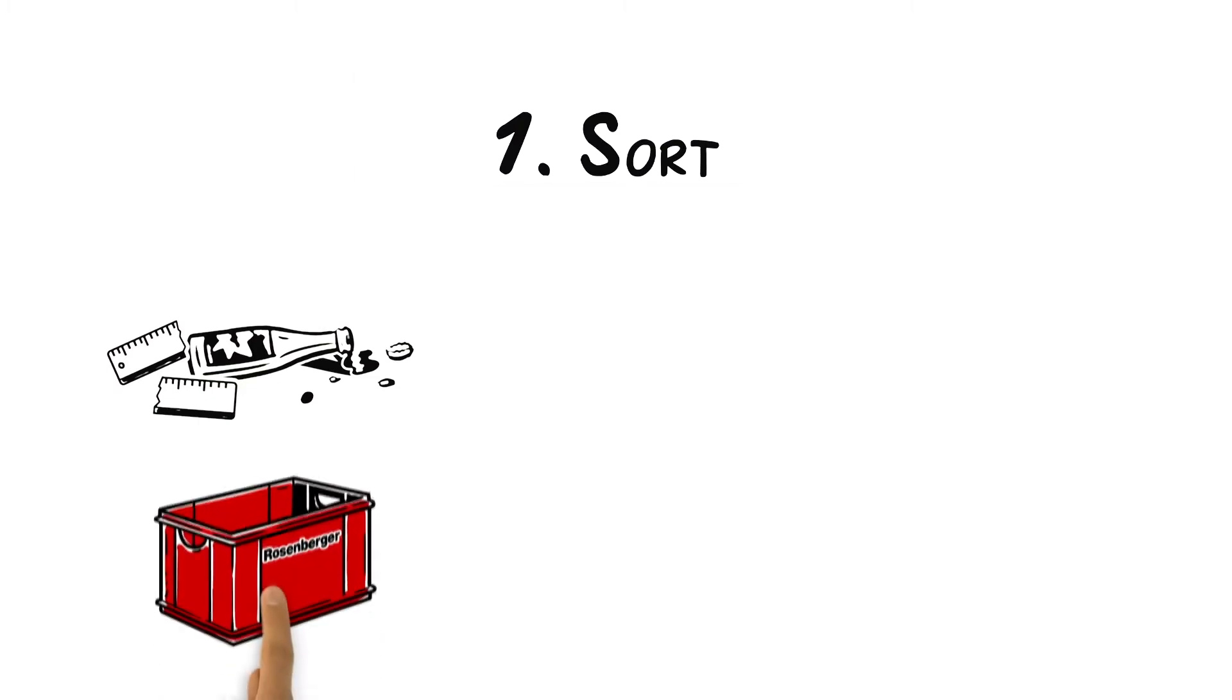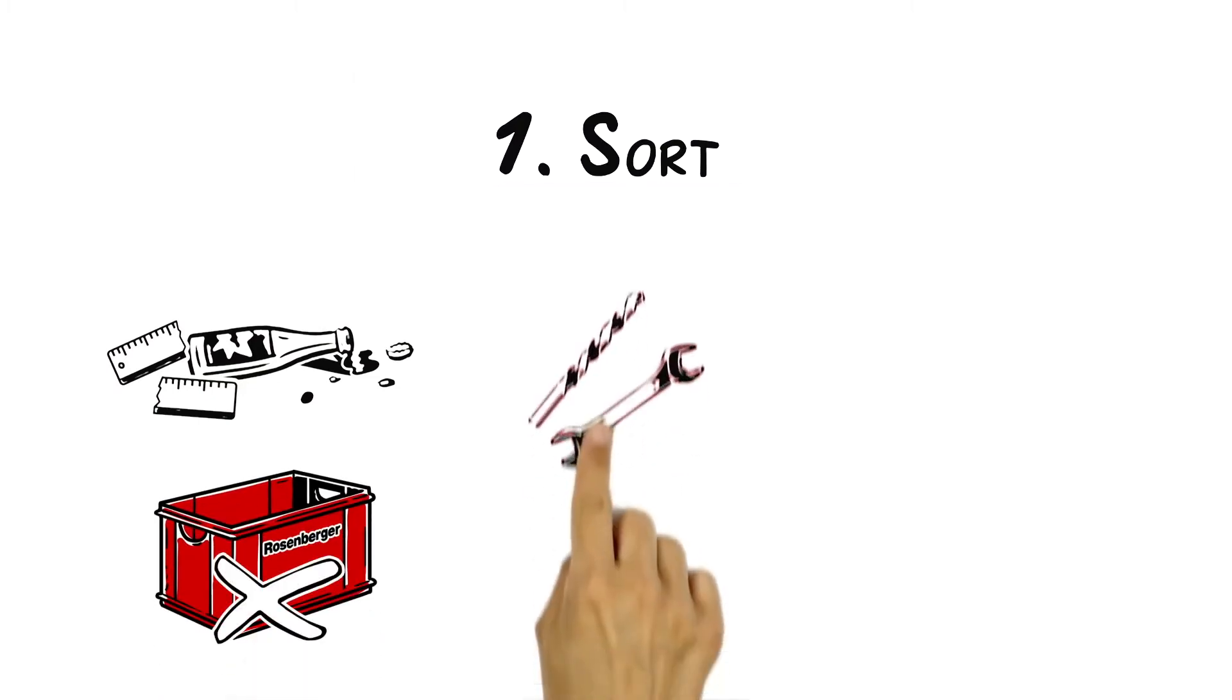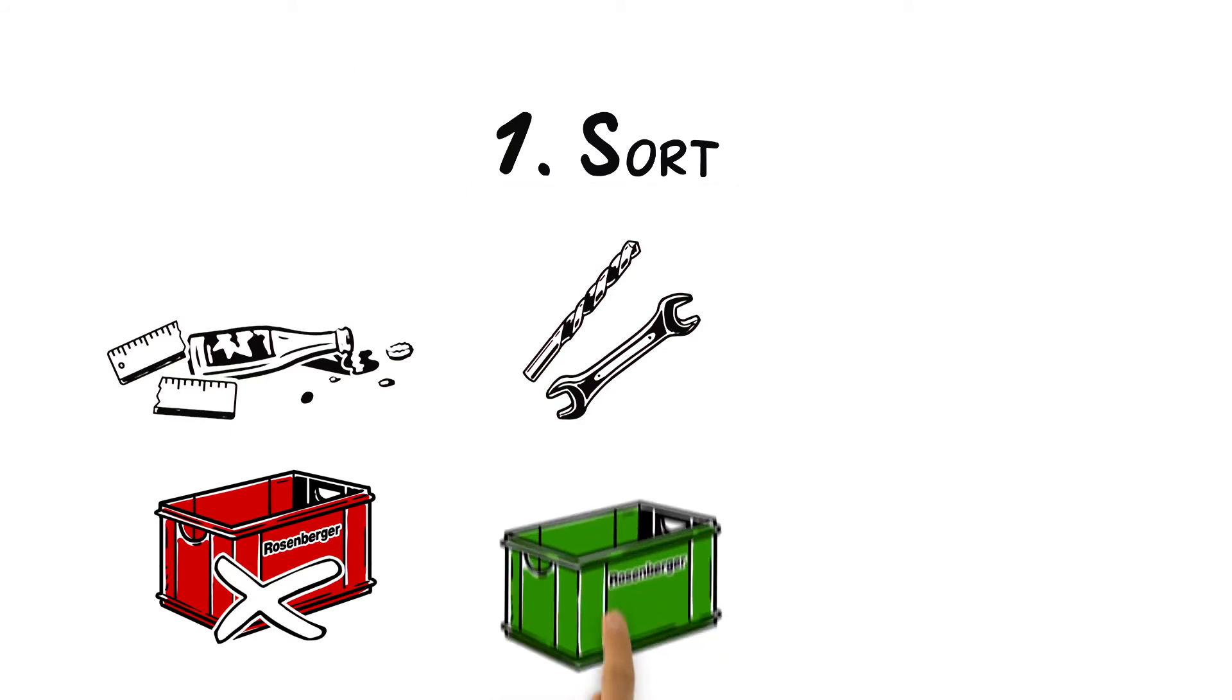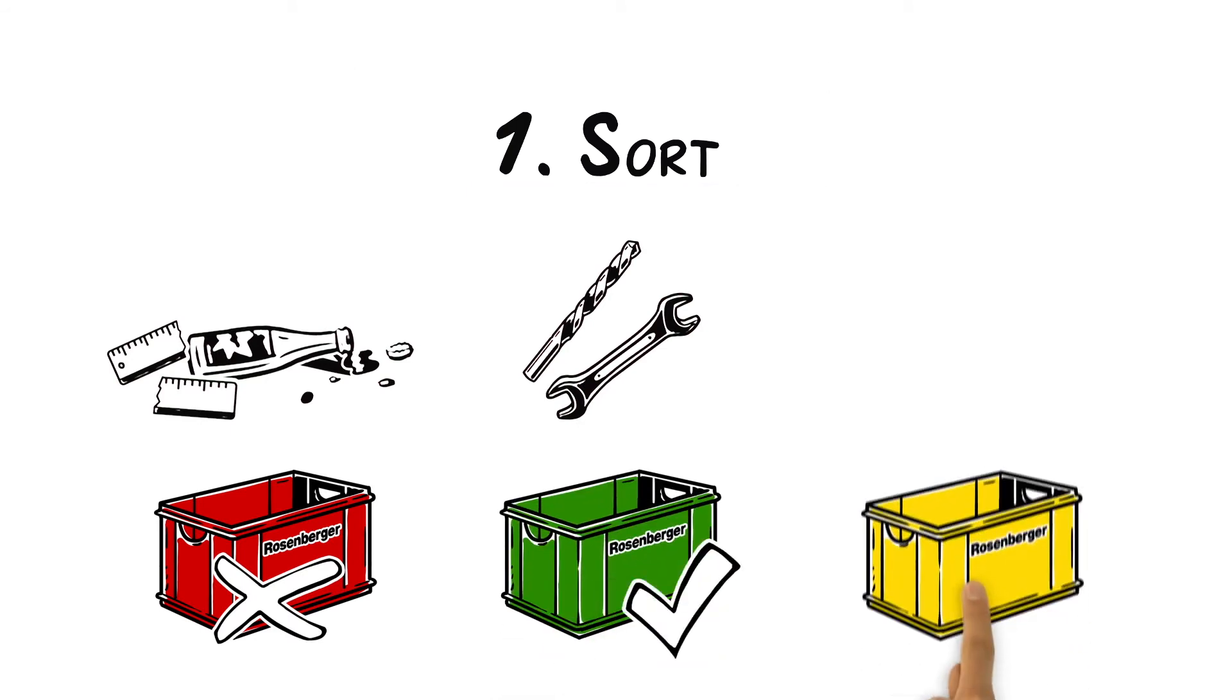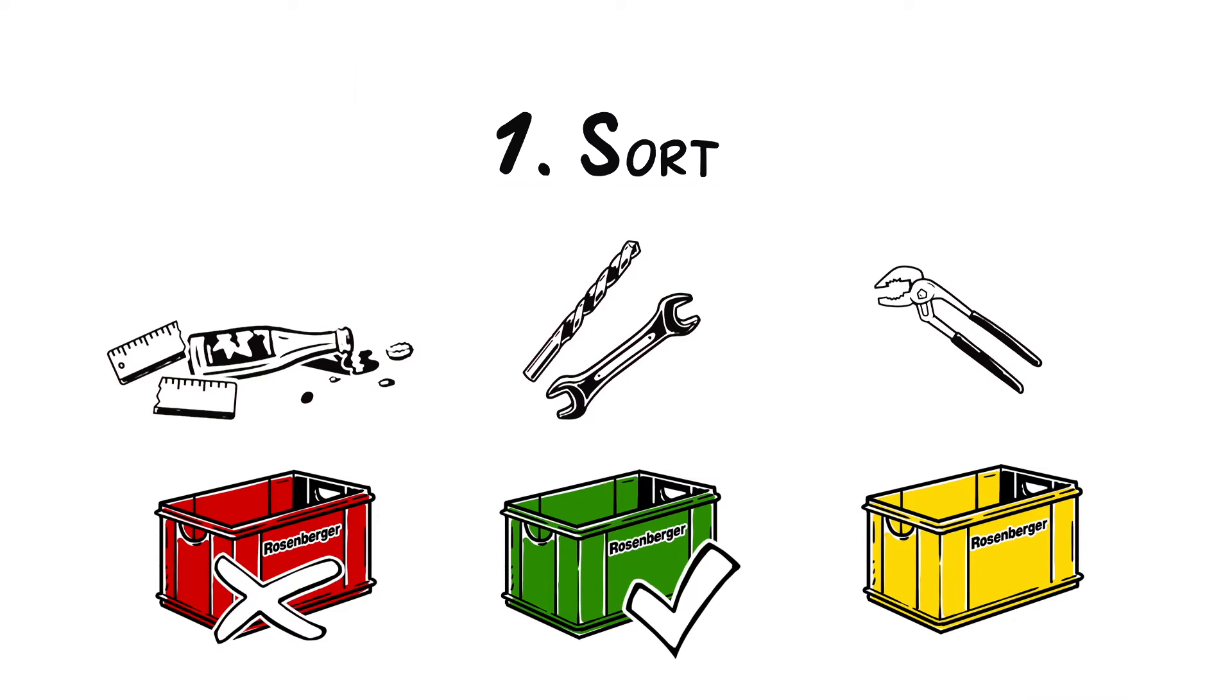The first S stands for Sort. That means we pick out unnecessary tools and items and place them in a red box. These will later be disposed of. The ones we need at our workspace go in the green box. And the yellow box is for everything we're not sure about.